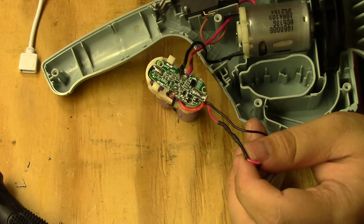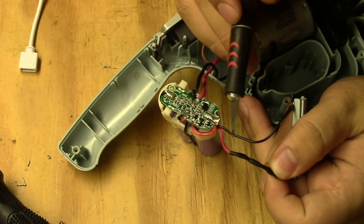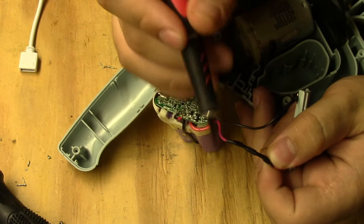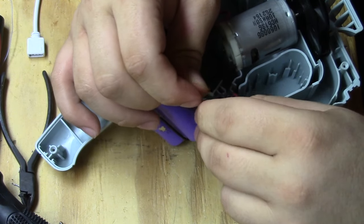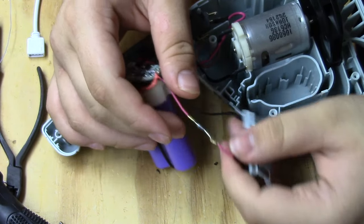So there appears to be something hiding underneath this heat shrink right here. My guess is that it's a reverse polarity protection diode. So just to make sure that it's not broken or reversed, I'm going to remove the heat shrink and test for a voltage drop and see if it's working.